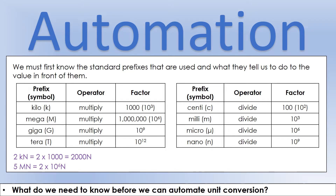10 to the 9 is standard form for 1 billion, and 10 to the 12 is standard form for 1 trillion. So for giga, we take the number and multiply it by a billion; for tera, we multiply it by a trillion. The prefixes are a really handy way of representing really big numbers, but it's something you have to watch out for in calculations — it's something that gets missed quite a lot.